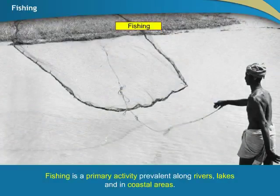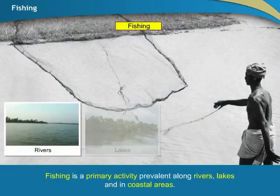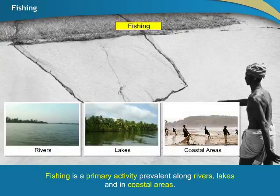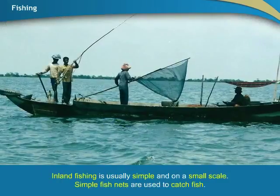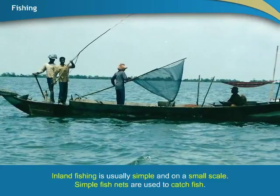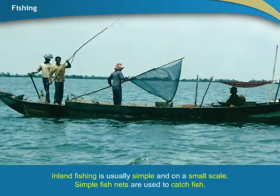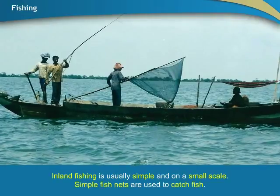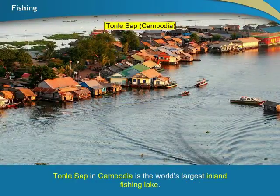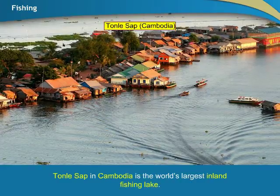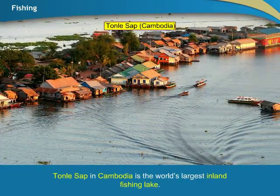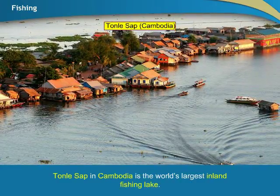Fishing is a primary activity prevalent along rivers, lakes and in coastal areas. Inland fishing is simpler and practiced on a small scale, using simple fish nets to catch fish. Tonle Sap, located in Cambodia, is the world's largest inland fishing lake.